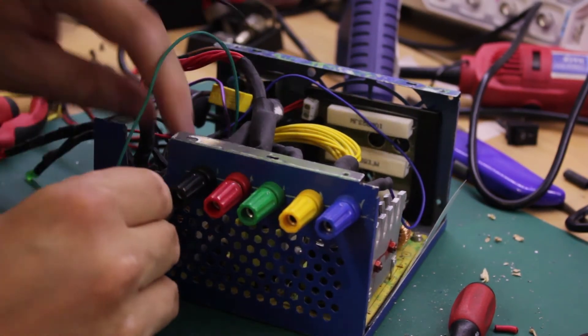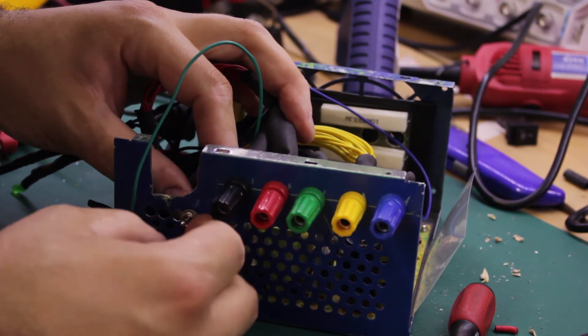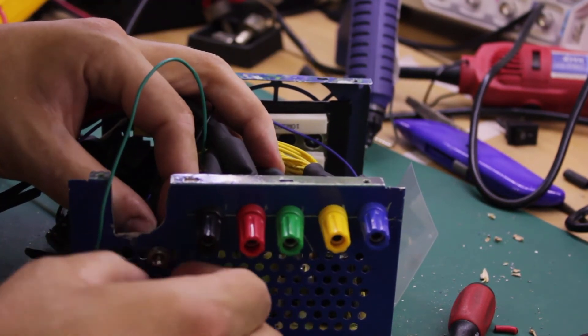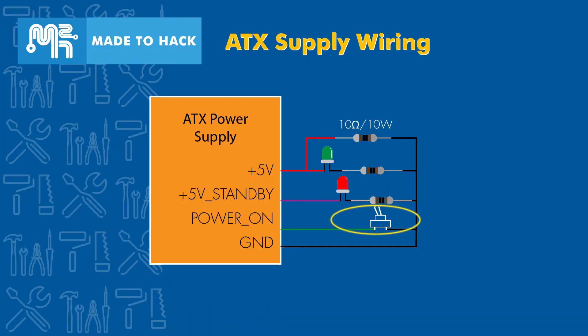I then also connected the power switch which turns on the different supply voltages. The small power switch is connected between the power on wire which is green and ground. When this switch is flipped, the various power rails are turned on.